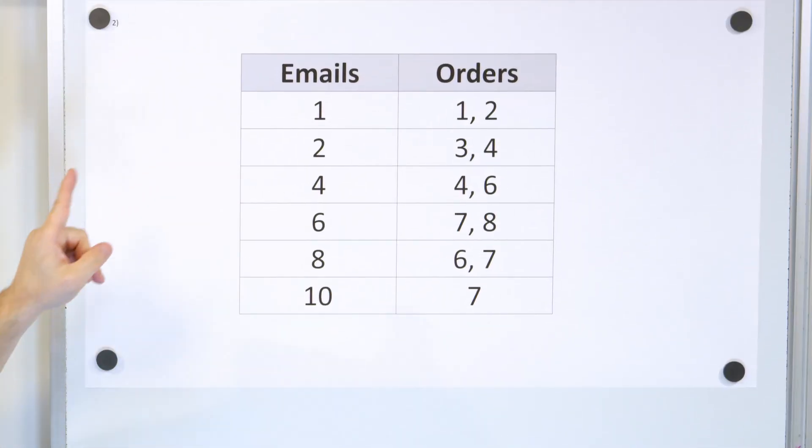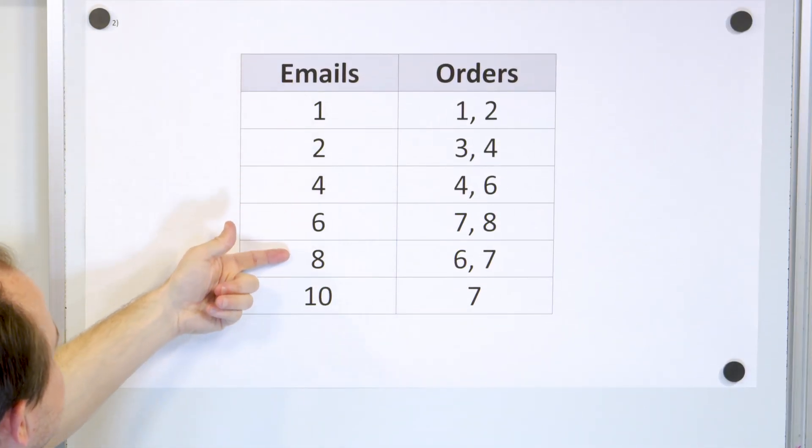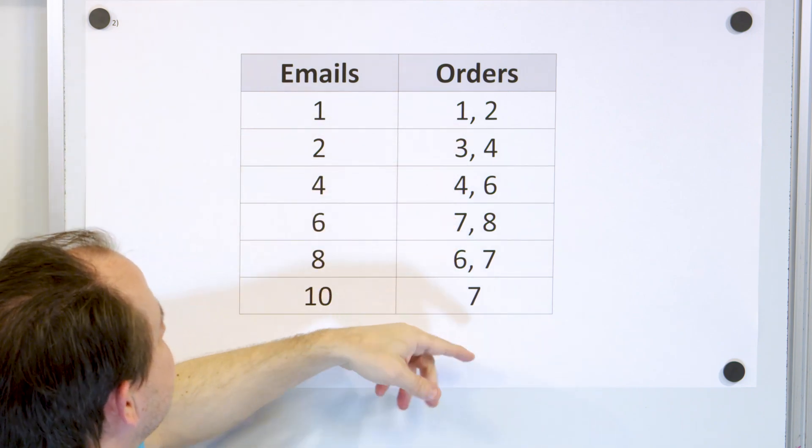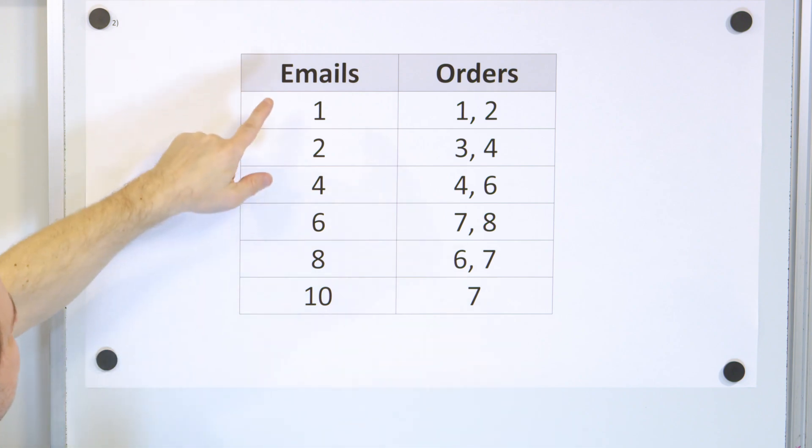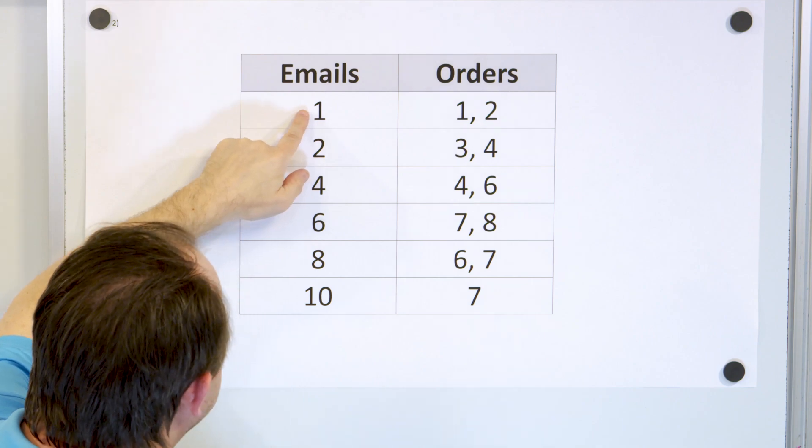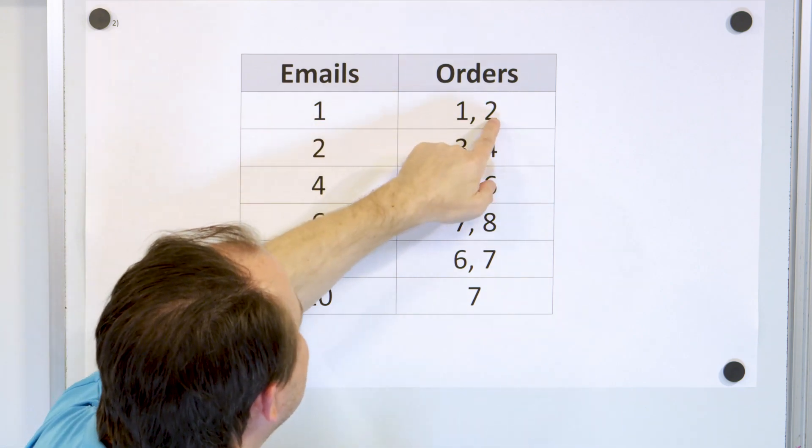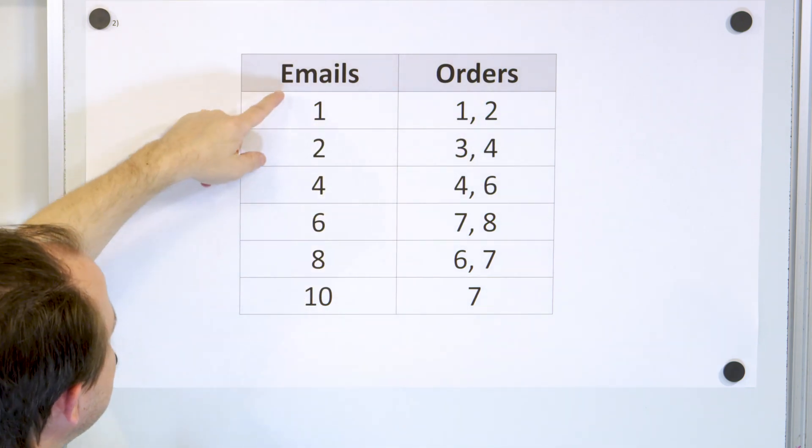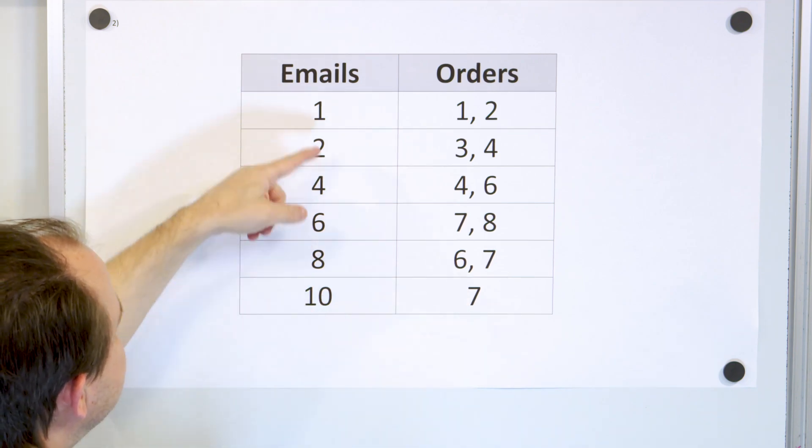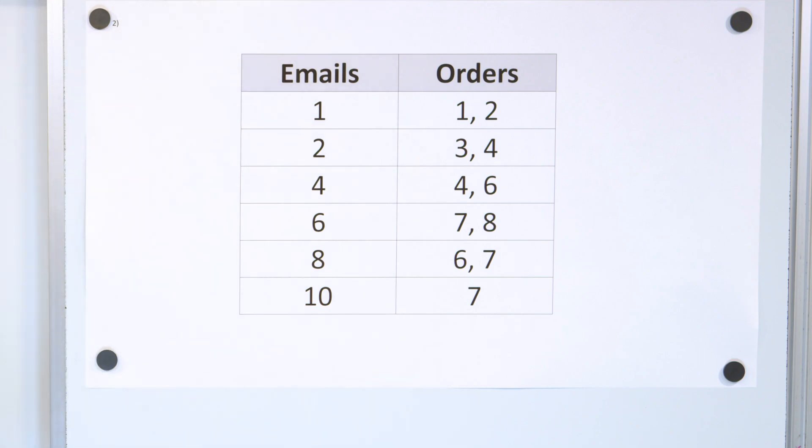Here we have some data in problem number two for the number of emails sent from some sort of online store and the number of orders received from various customers. With one email, we got one order from one customer and two orders from another. As we go up in emails, it looks like we're getting more orders the more emails we're sending. So let's do a scatter plot and see if we can interpret some results.